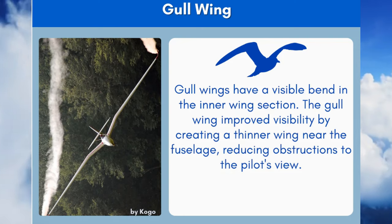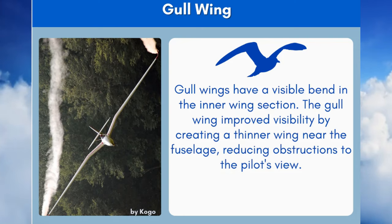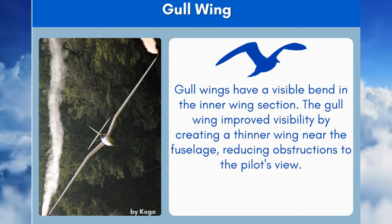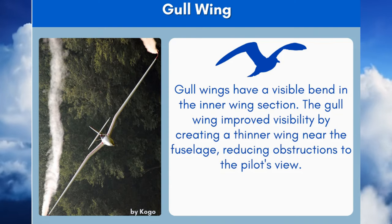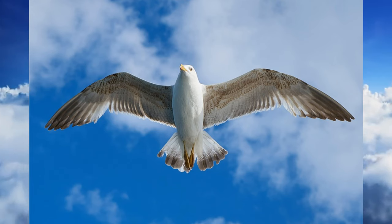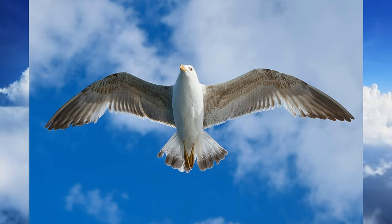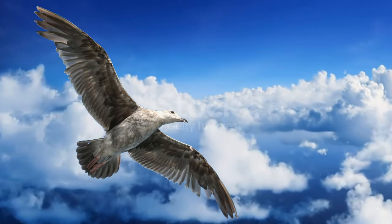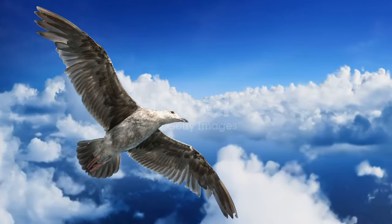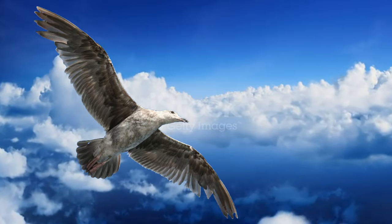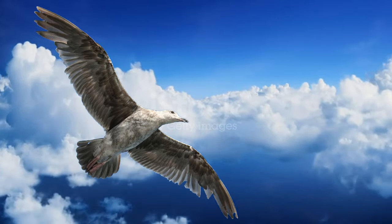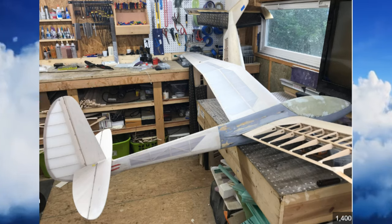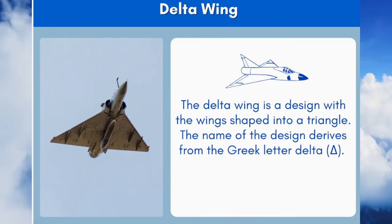3. Gull Wing Design. The gull wing configuration lives up to its name, with the aircraft wings resembling a seagull's wing shape. The wings have a visible bend in the inner wing section. The gull wing improved visibility by creating a thinner wing near the fuselage, reducing obstructions to the pilot's view. This wing configuration was first used on gliders before being utilized on sailplanes and seaplanes as well.